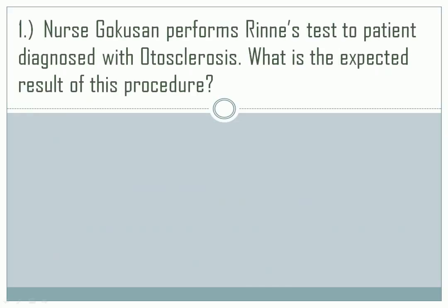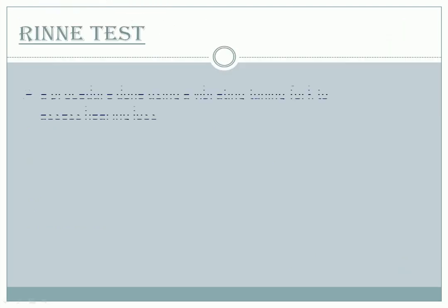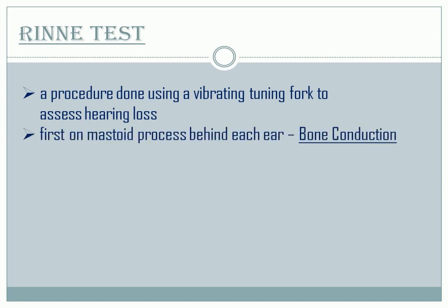Question number one. The correct answer is letter A, Conductive Hearing Loss. The Rinne test is a procedure done using a vibrating tuning fork to assess hearing loss. Initially, it is placed on the mastoid process behind each ear until the sound can no longer be heard. This is to check the bone conduction.